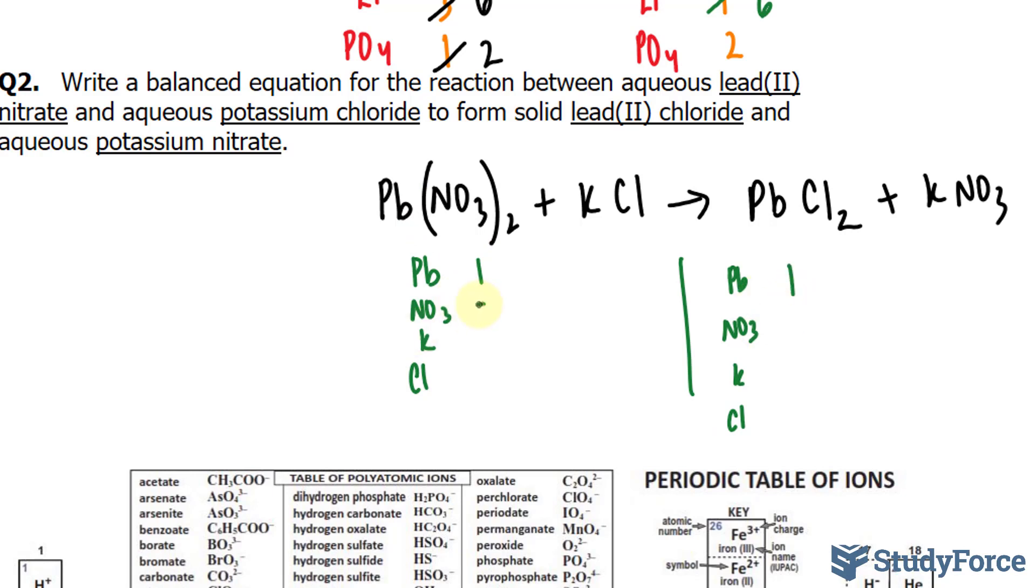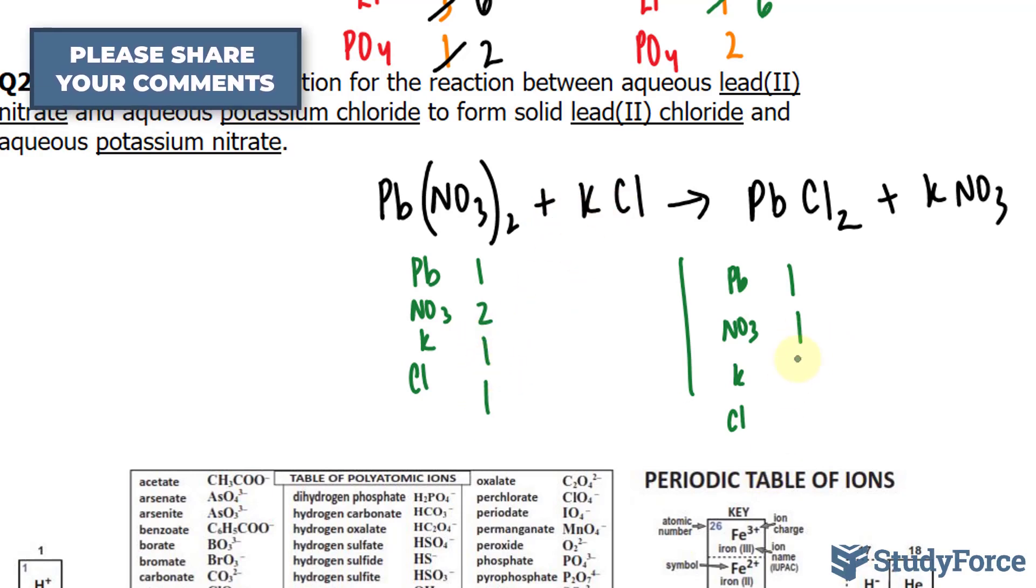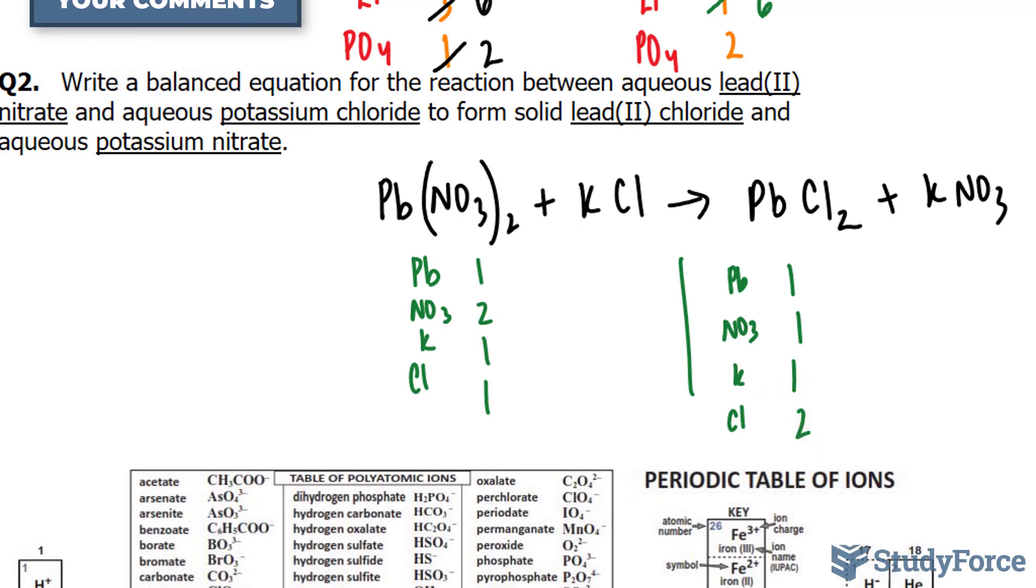We have 1 lead atom on each side. We have 2 nitrates on the left side, 1 on the right side, 1 potassium on the left side, 1 chlorine, 1 and 2.